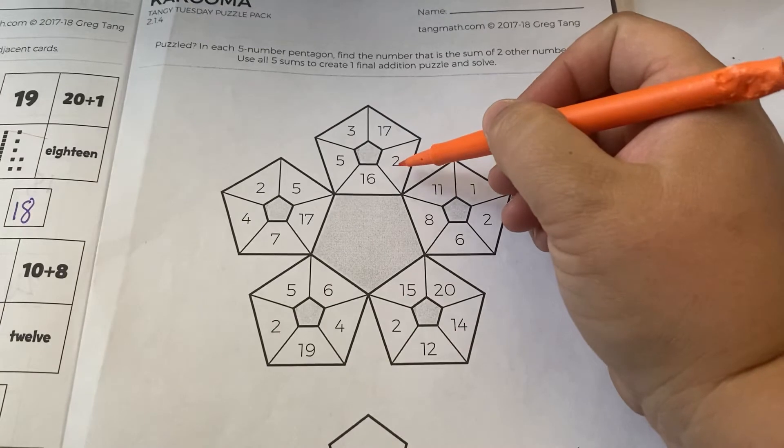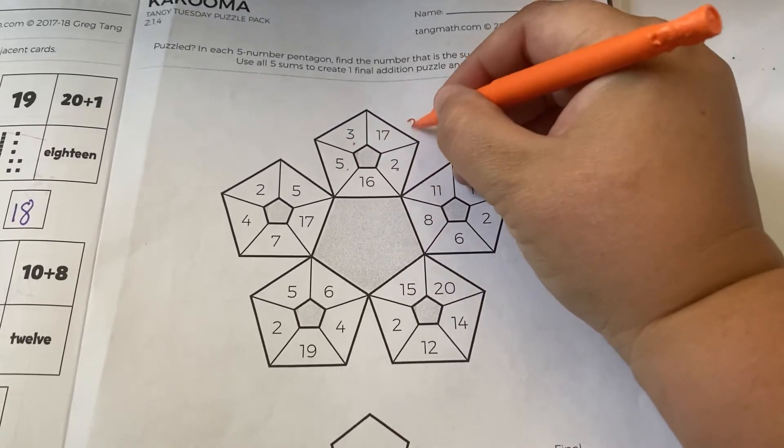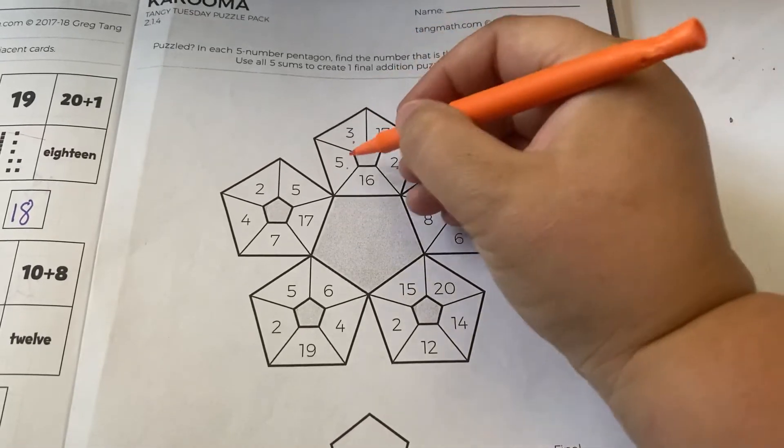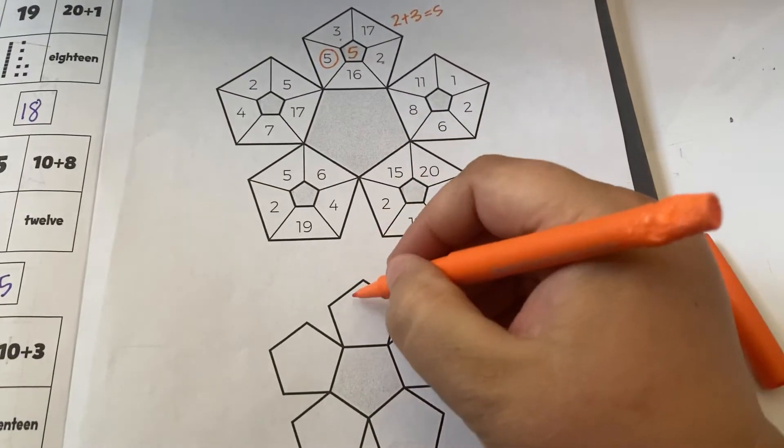I know that two plus three make five. So I'm going to write five in the middle here and then also down here.